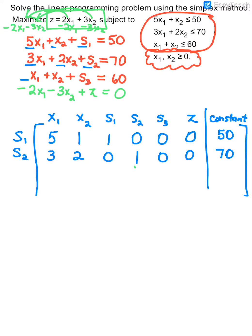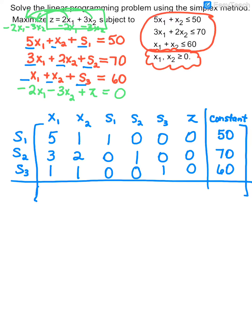For my third equation, it's understood to be a coefficient of 1 in front of X1 and 1 in front of X2. I do not have S1 or S2. The coefficient of S3 is understood to be 1. There is no Z, and the constant is 60. Starting out, that row represents the value of S3. Now we put a line to separate our constraints from our objective function. On the bottom row, the coefficients of our objective function are negative 2 and negative 3. There is no S1, S2, or S3, so those are all zeros. The coefficient of Z is understood to be 1, the constant is 0, and that row represents your Z value.